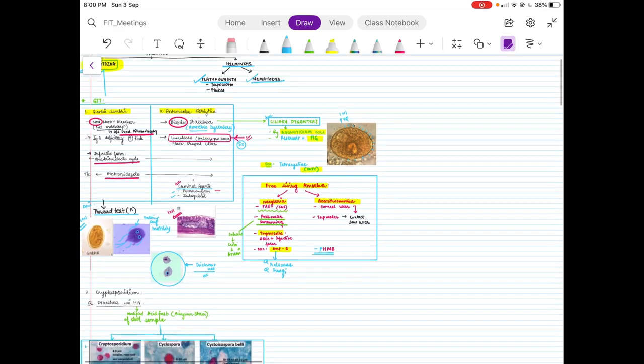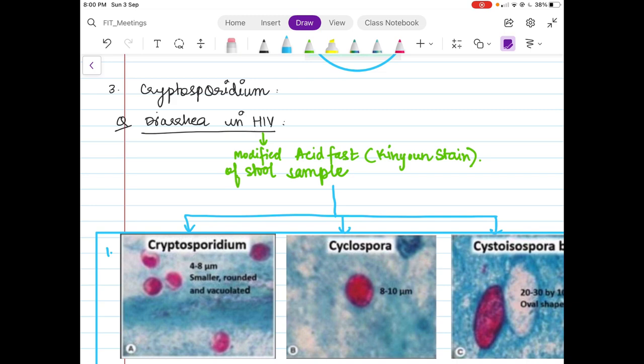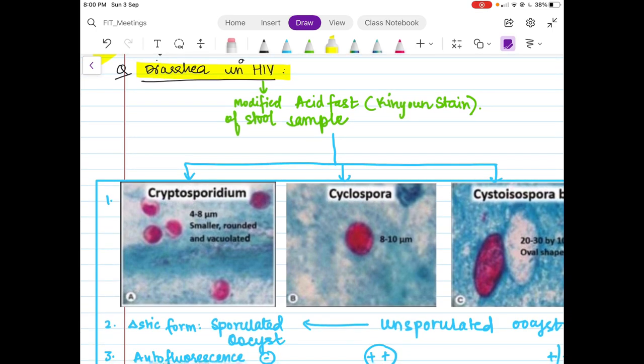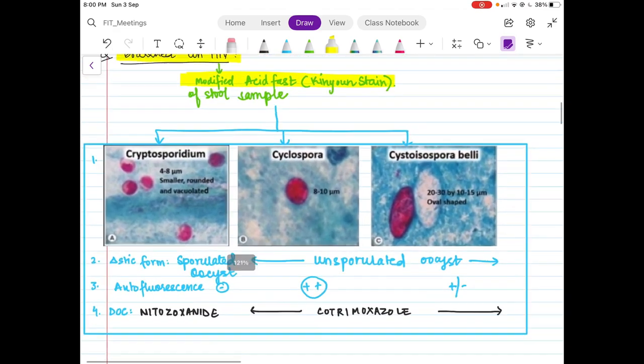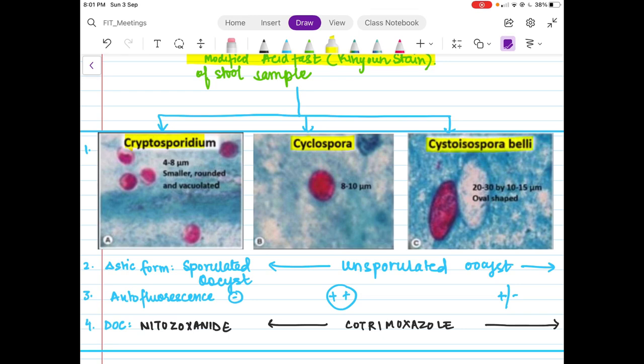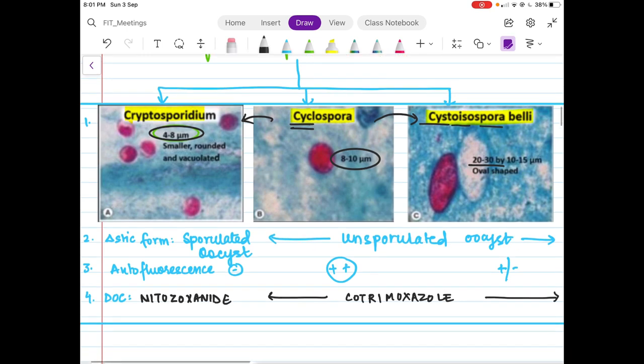Now coming to the other protozoa affecting the GIT, I have Cryptosporidium. Cryptosporidium is a very frequently asked topic. If you need to know one thing from this entire PDF, I would say do not miss out on this topic: diarrhea and HIV. Whenever you have a case of persistent diarrhea and HIV, the next step commonly asked is do the modified acid-fast stain, which is known as the Kinyoun staining. You would have three pictures which can come to you: Cryptosporidium, Cyclospora, or Cystoisospora belli. Remember you will get the size in the clinical images. The smallest is Cryptosporidium. In the middle, I remember it as Cyclospora with 8 to 10 microns. Cystoisospora, the longest name with the biggest size, is 20 to 30 microns.